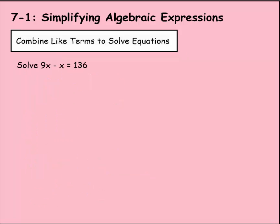Now we're going to take everything we've learned so far and use it to solve equations. We have 9x - x = 136. Well, we know that we can simplify this because they have the same variable and the same exponent. So 9x minus x would be 8x. Remember when it's an x by itself, it's just 1x.